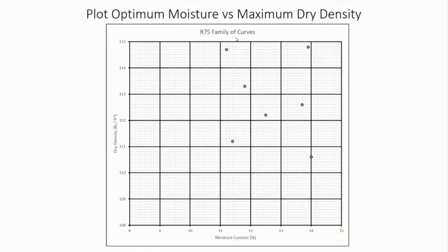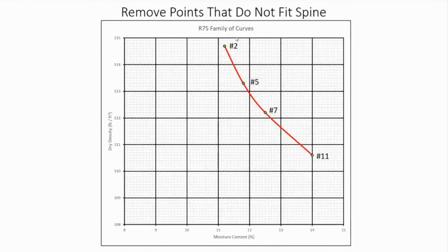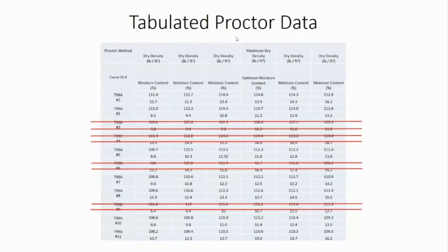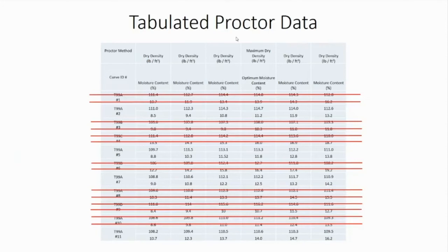The next step is to develop the spine of the family of curves. The spine is a best-fit, concave-up curve that connects as many of the optimum moisture and maximum dry density points as possible. Those that fit on the spine define our family of curves; those that do not are removed. The curves that fit are curve 2, curve 5, curve 7, and curve 11. Curves 1, 8, and 10 did not fit and are removed.